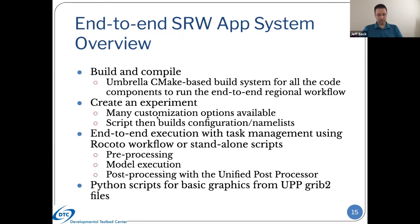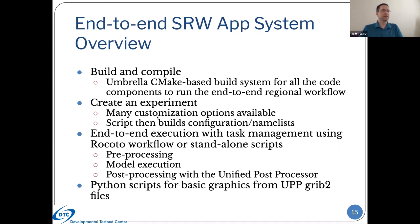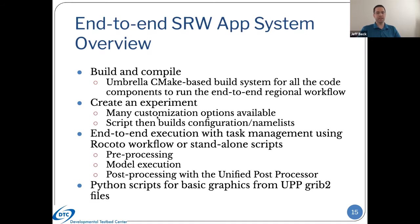A brief high-level overview of what the Short-Range Weather app consists of: we have the umbrella CMake build and compile that allows you to build the code for the end-to-end system. Users create their experiment with many customization options available, all contained within a single config file — a central location where users can define what kind of experiment they want to run. A single script then builds the configuration the user wants and sets up the namelists as needed to run the application.